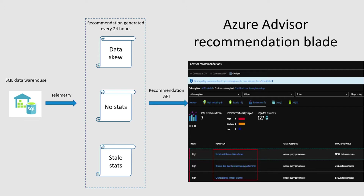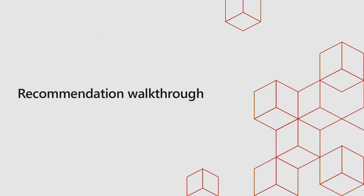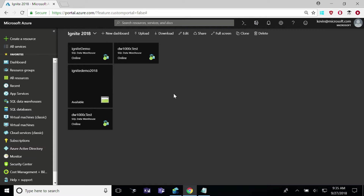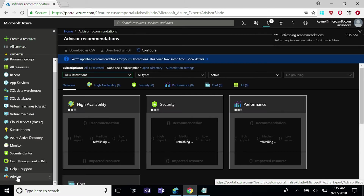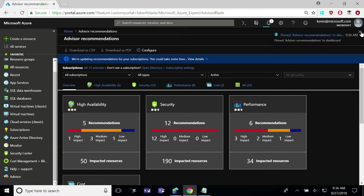Currently we support data skew detection and statistics checks. If you haven't created statistics on your frequently queried tables, we will provide you a notification. If you have outdated statistics, we will also notify you in the Azure portal. I want to do a quick walkthrough of how to discover recommendations in the Azure portal and how to seamlessly apply them directly there.